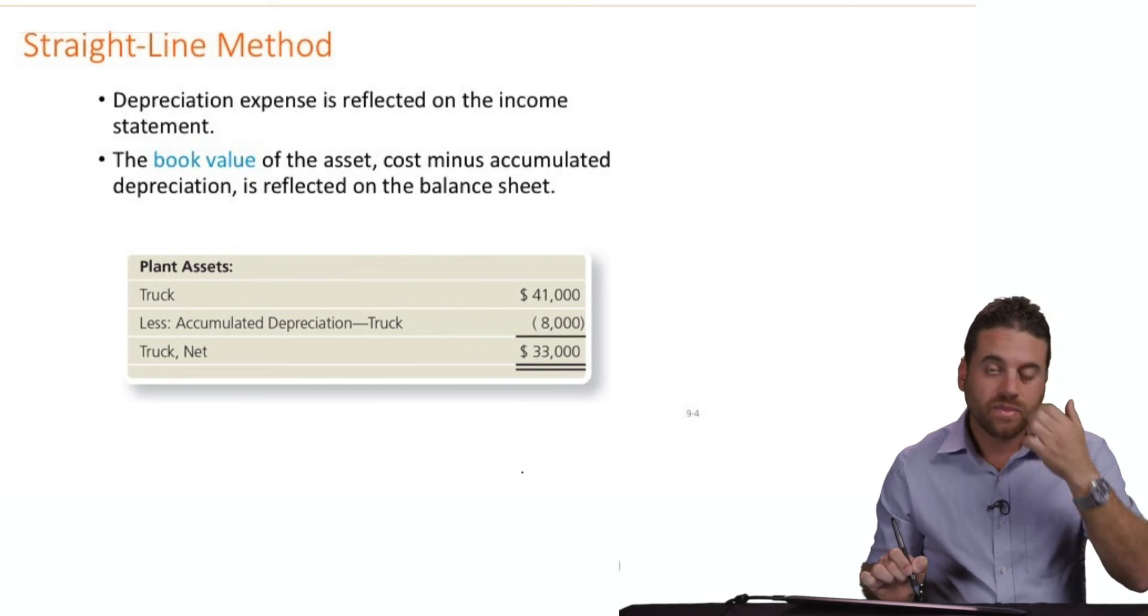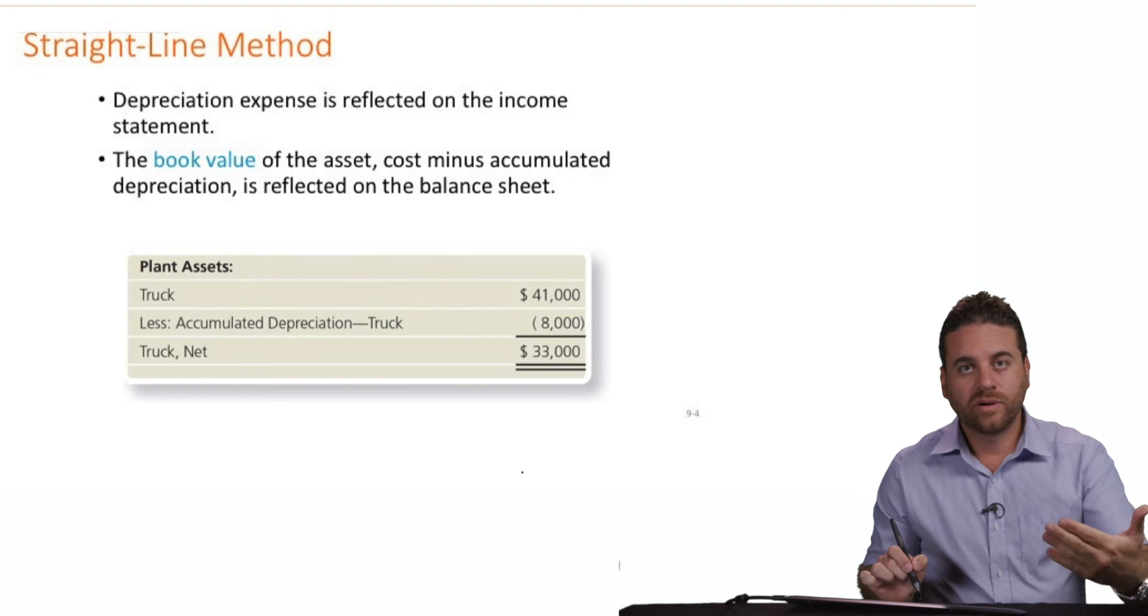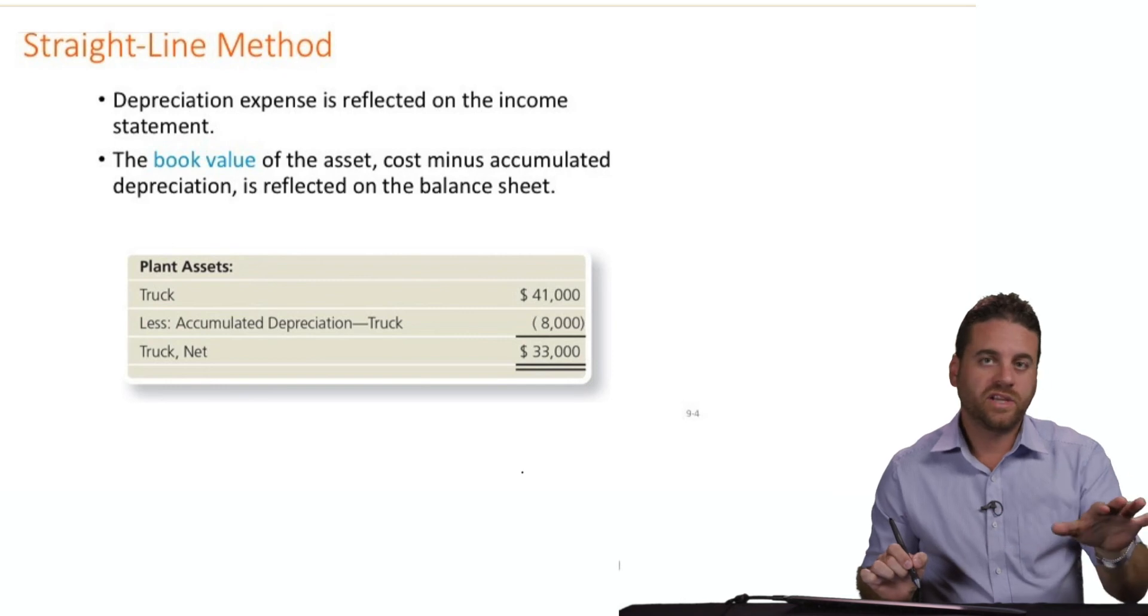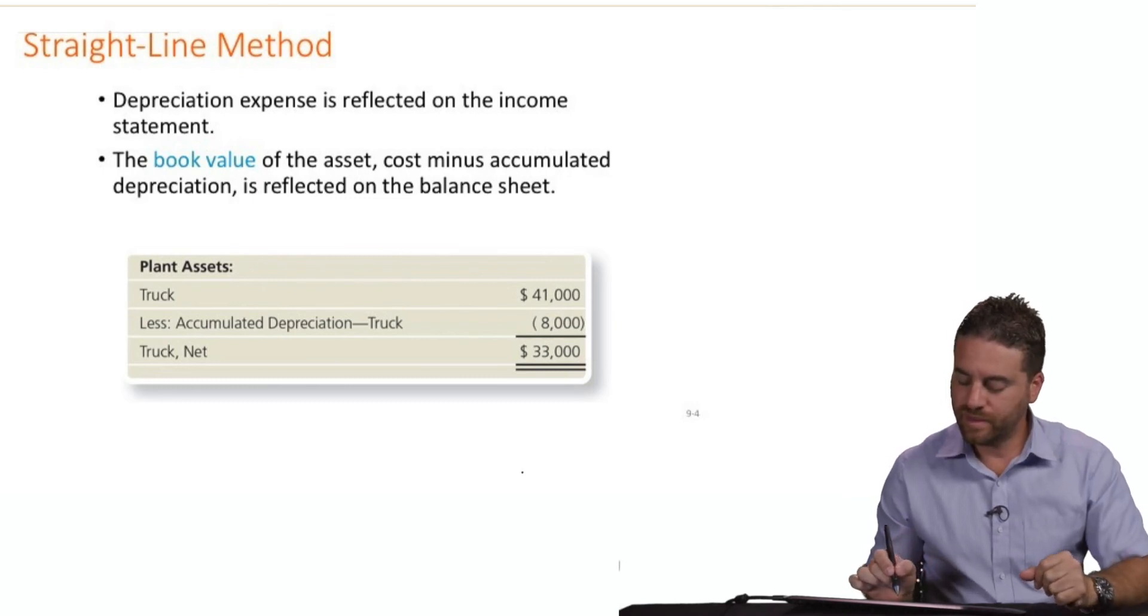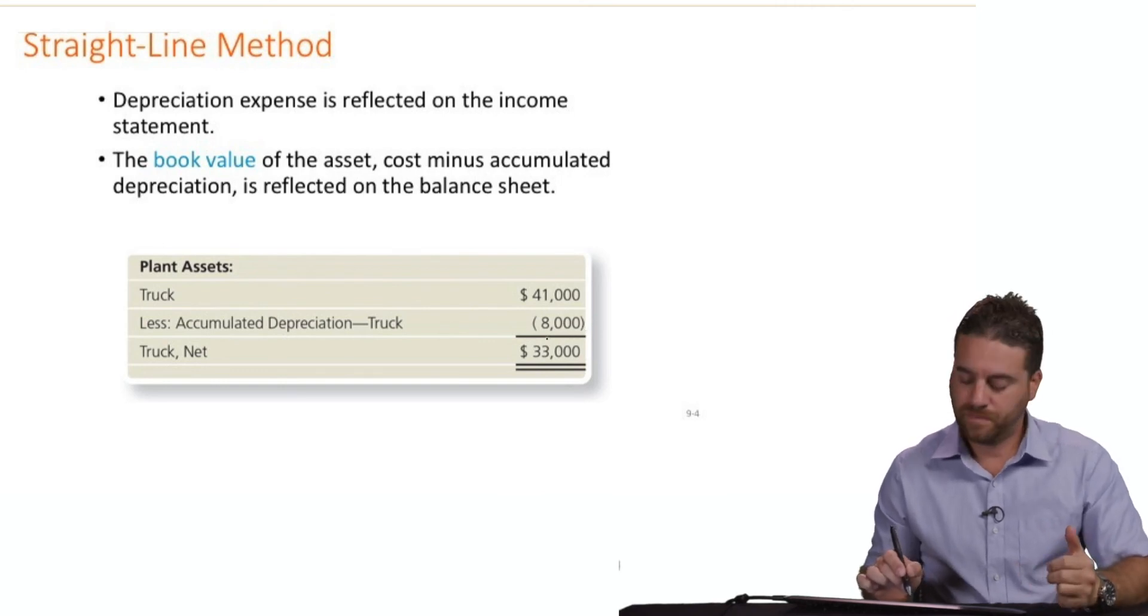In other words, as we go over time, we will depreciate more. Depreciation means loss in value. So the total assets, if nothing else is changing except the truck, should decrease the more we depreciate that truck. Remember, it's a contra account, so it's a credit balance. And because it's credit, it's a negative in the assets.